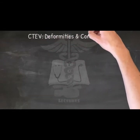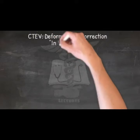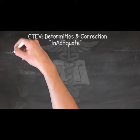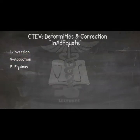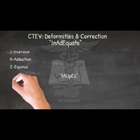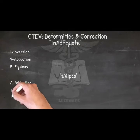CTEV deformities and correction. Congenital talipes equinovarus (CTEV), otherwise known as clubfoot, is a birth defect where one or both feet are rotated inward and downward. The deformities are inversion, adduction, and equinus. To remember the sequence of correction, think 'Talipus': Adduction, Inversion, Equinus.